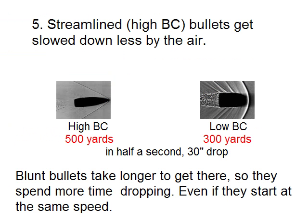We want streamlined bullets. A streamlined bullet has a high BC number — high BC means streamlined. The advantage is that more streamlined bullets don't slow down as much as they travel through the air. A pointy bullet might travel 500 yards in the time it takes a blunt bullet to travel 300 yards, and they both drop the same amount. Blunt bullets take longer to get there, so they spend more time dropping, assuming they start at the same speed.